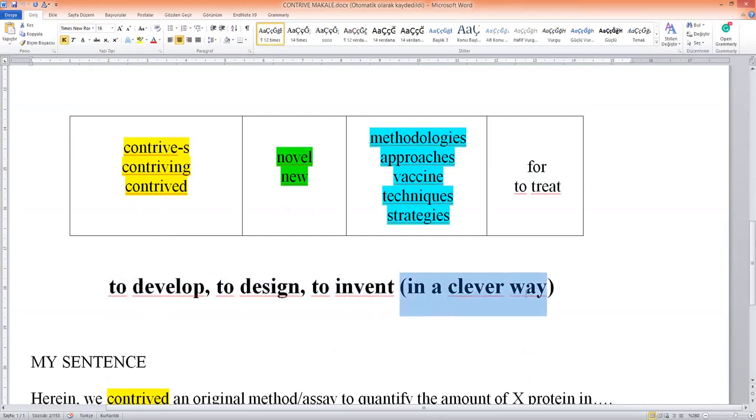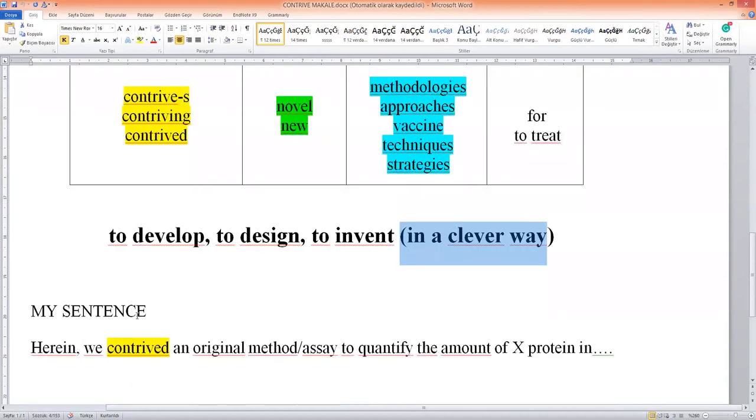And lastly, let's see my sentence. Here, we contrived an original method or original assay to quantify the amount of X protein in a sample.